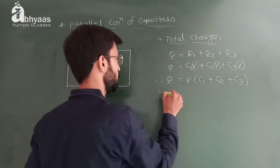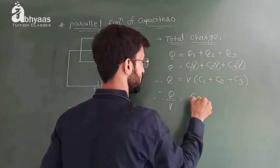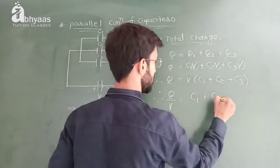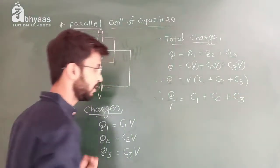That means Q divided by V is equal to C1 plus C2 plus C3, right?